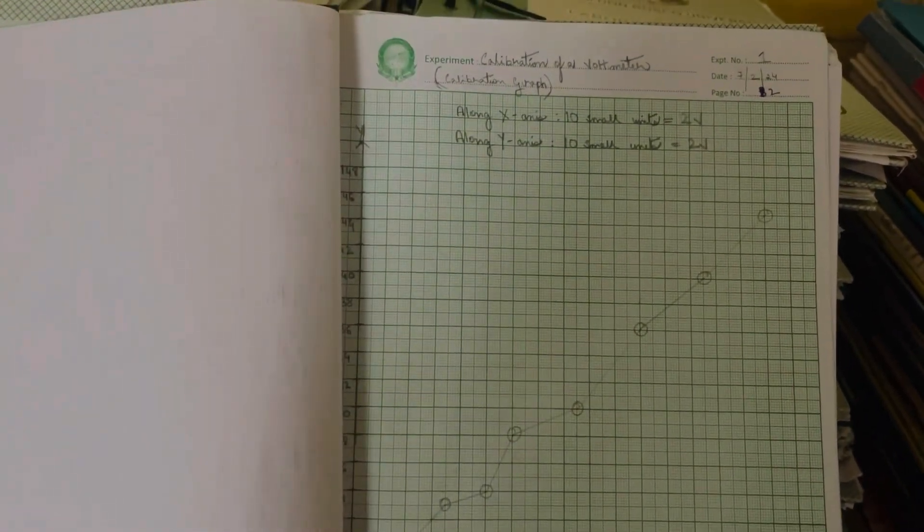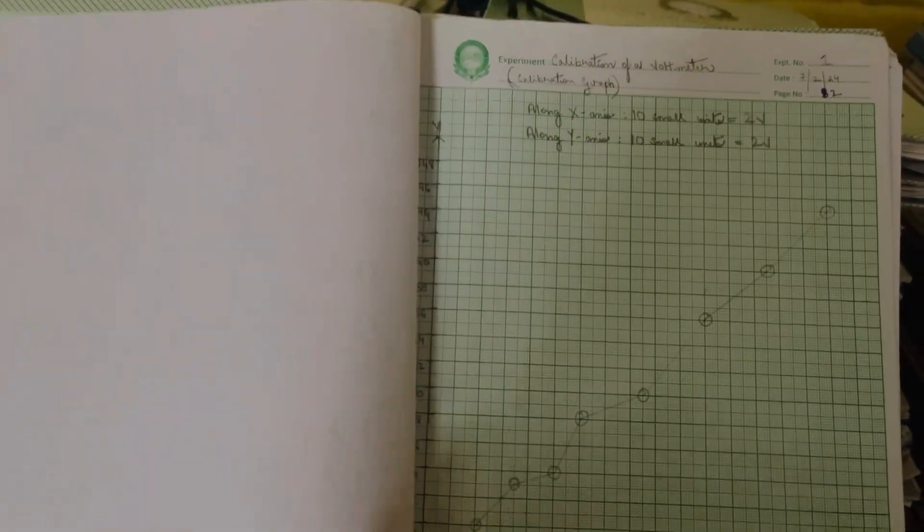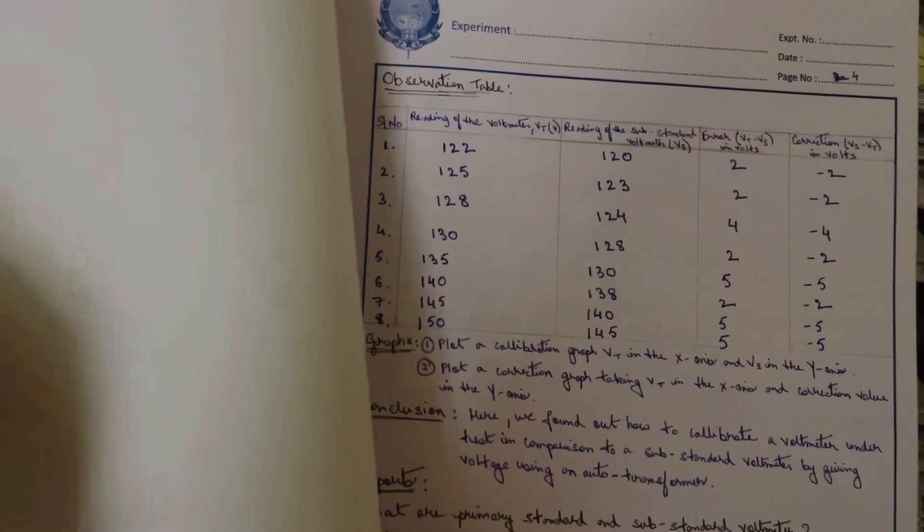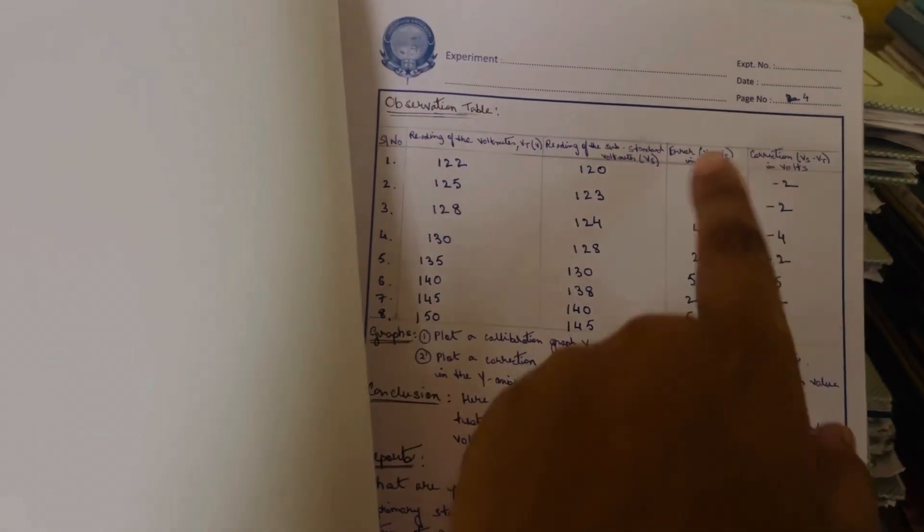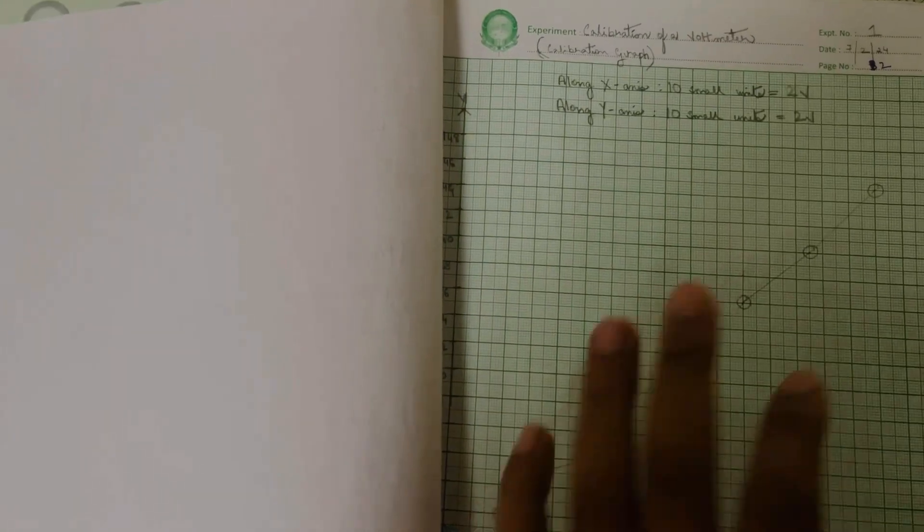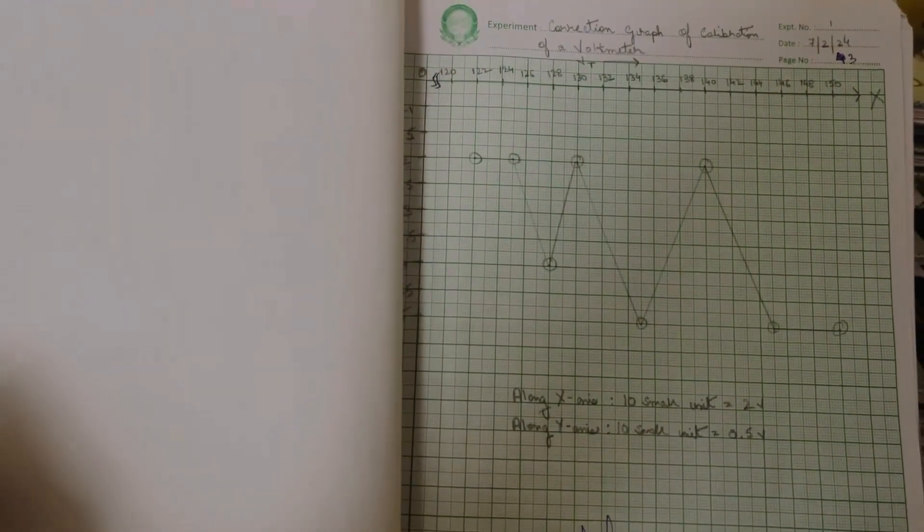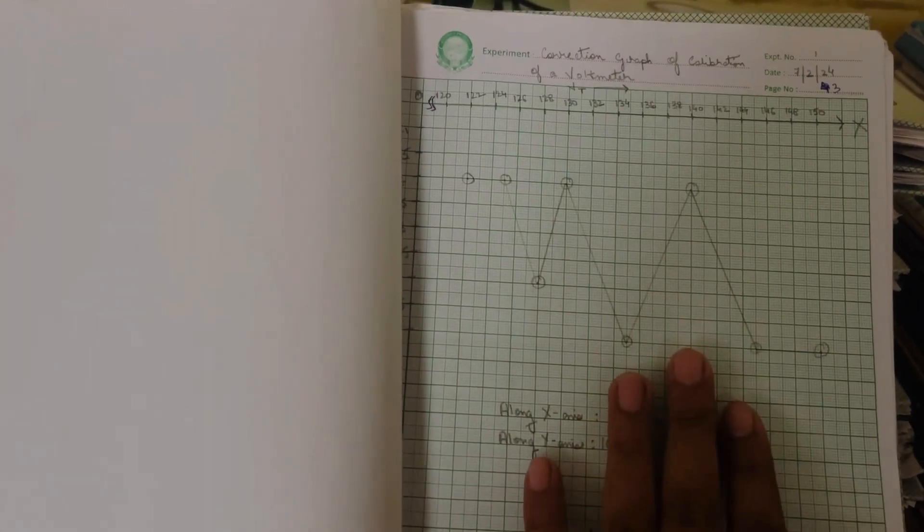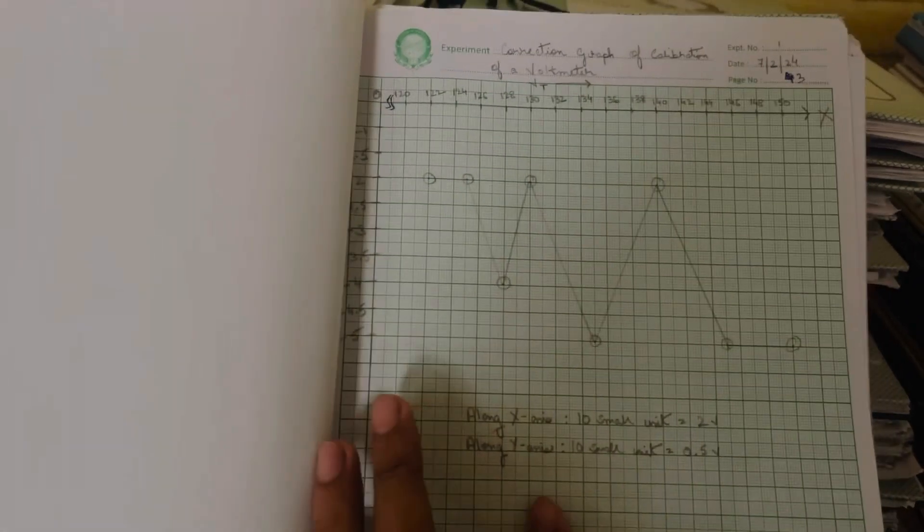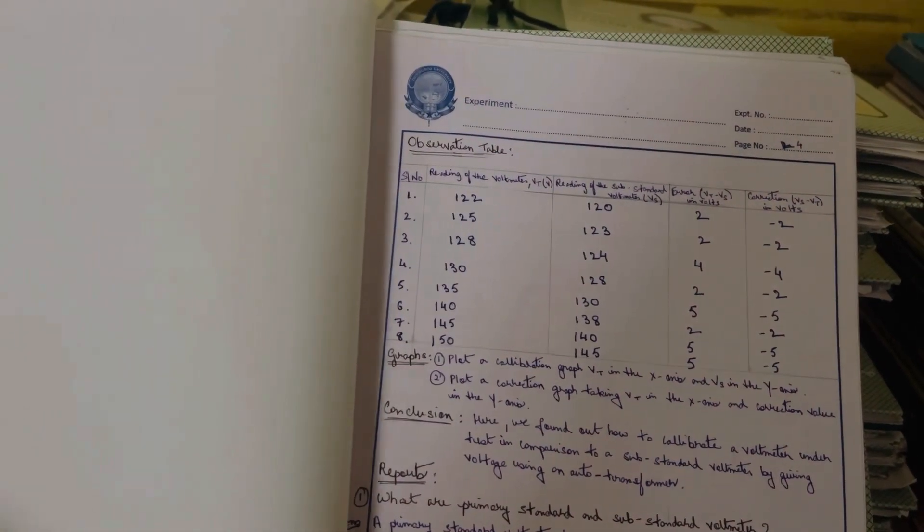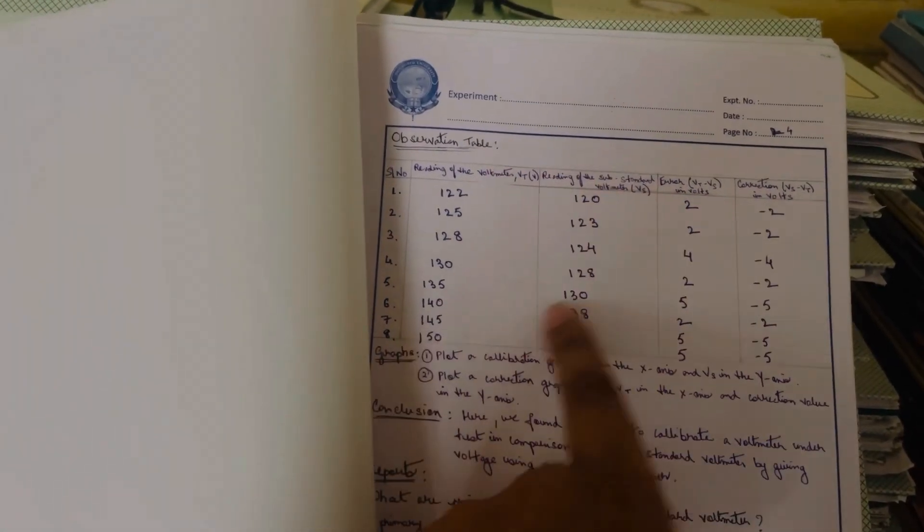Next we have to plot the graph, the calibration graph. This is the value of BT, so you keep impacting this, then it is the verification pattern.